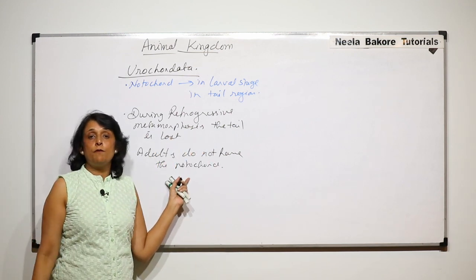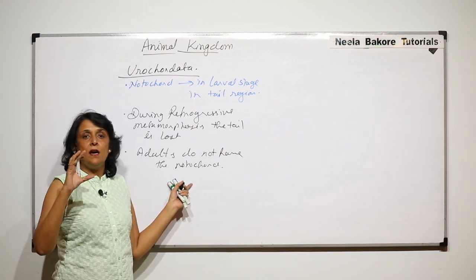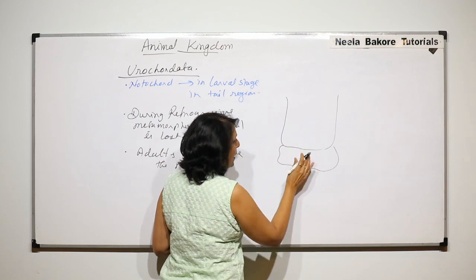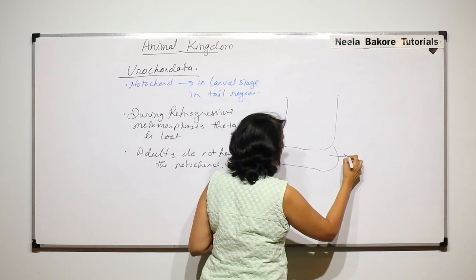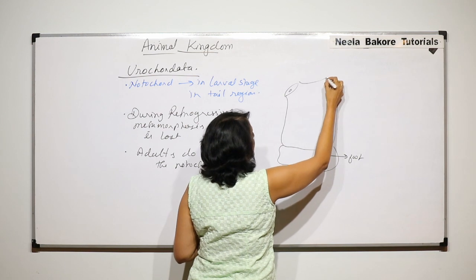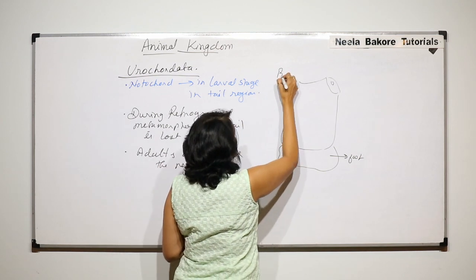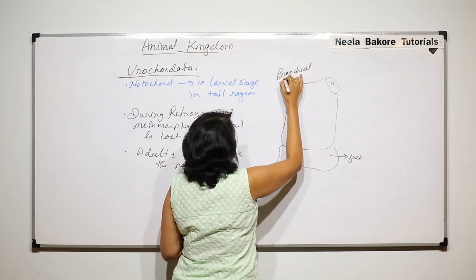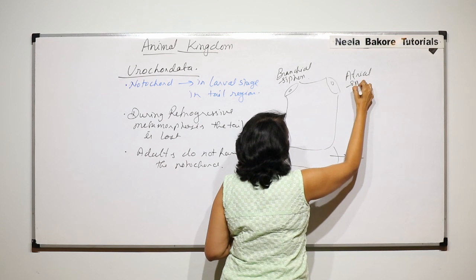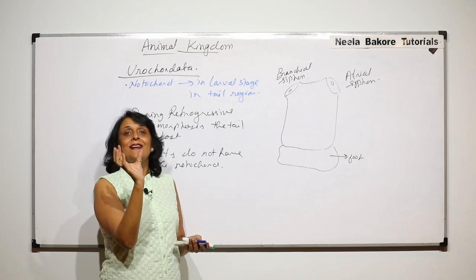Because of this metamorphosis, when the larva changes into the adult, the adult looks like a very stumpy organism. The body has a foot part with which it is attached to the substratum. The body has two openings known as siphons — one is called the branchial siphon and the other is known as the atrial siphon. Each opening opens into a sack-like structure inside.